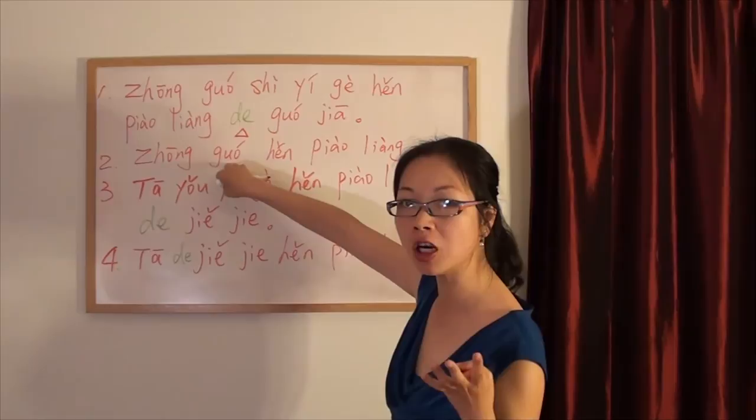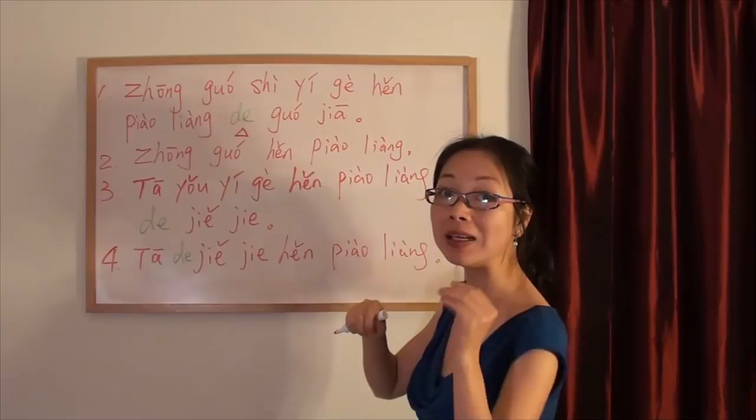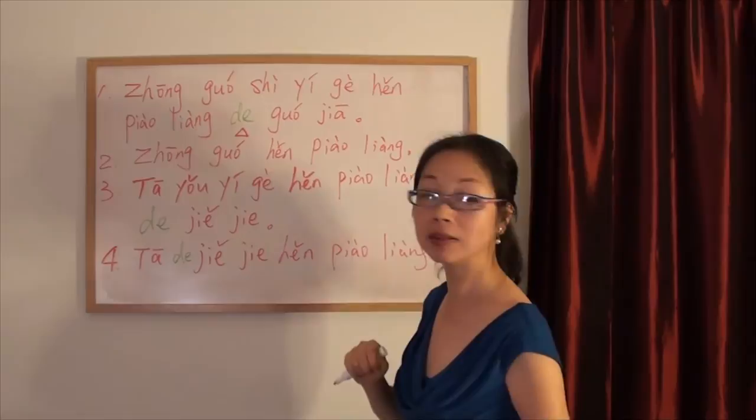The verb in English is is. China is very beautiful. So in English, the verb is is. But in Chinese, you don't even translate it.